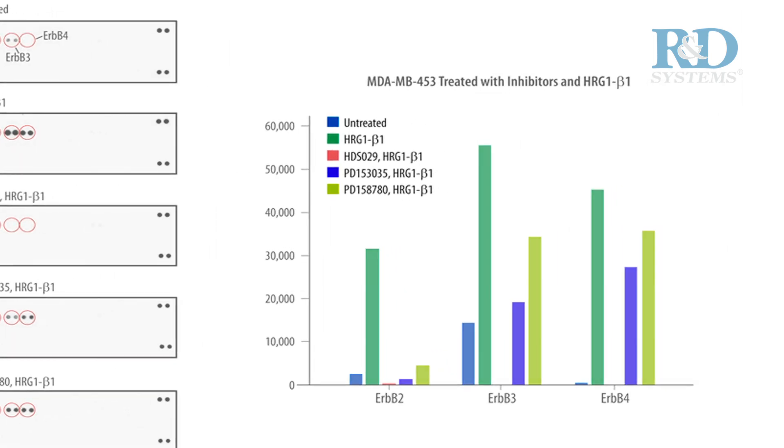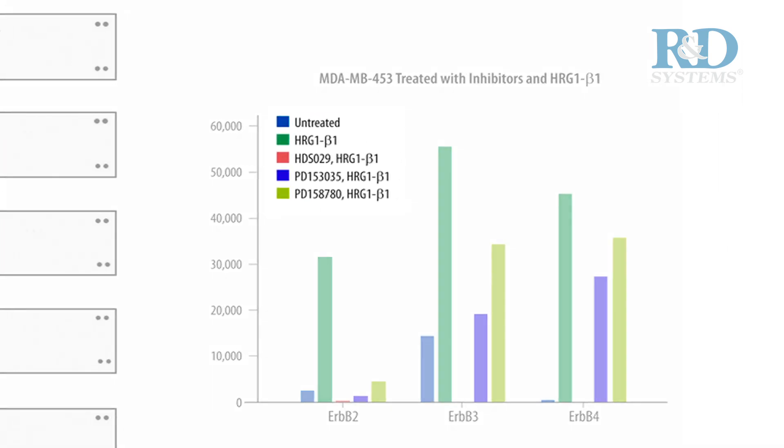Data is shown for MDA-MB453 cells that were untreated, treated with recombinant human heregulin beta-1 for 5 minutes, or pre-treated with known ErbB family inhibitors prior to HRG beta-1 treatment.